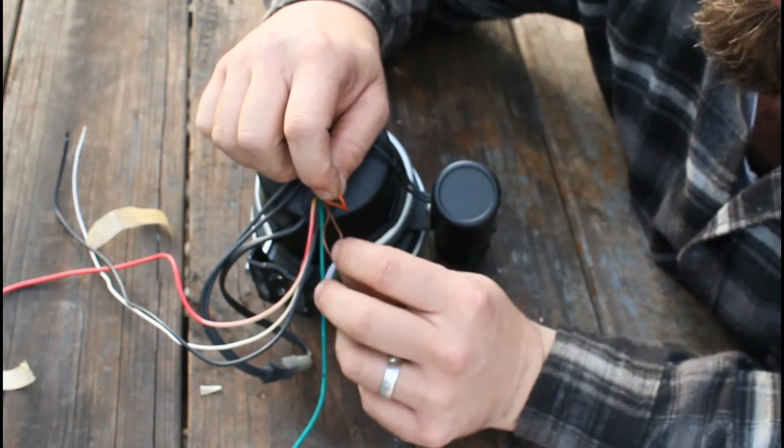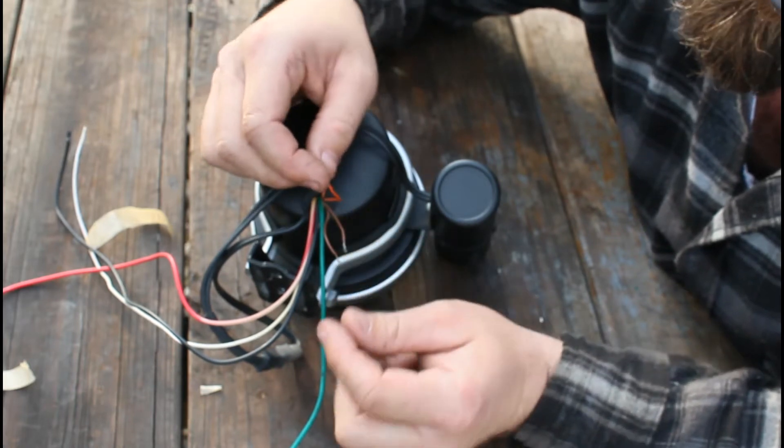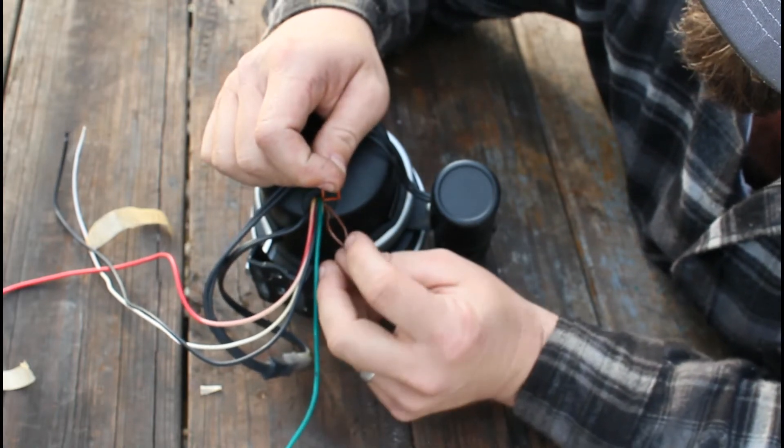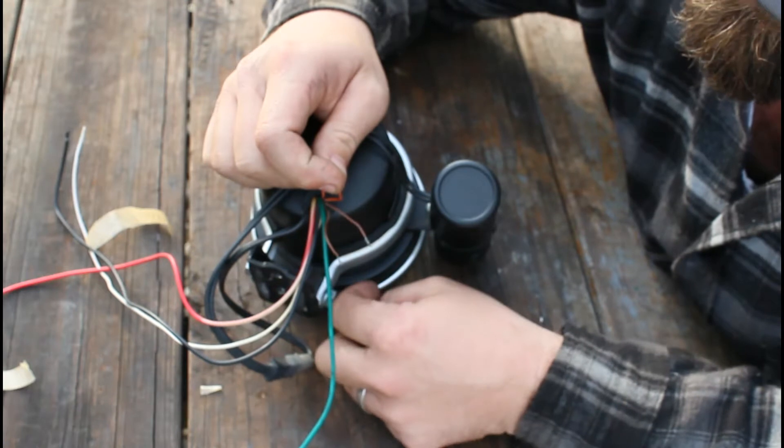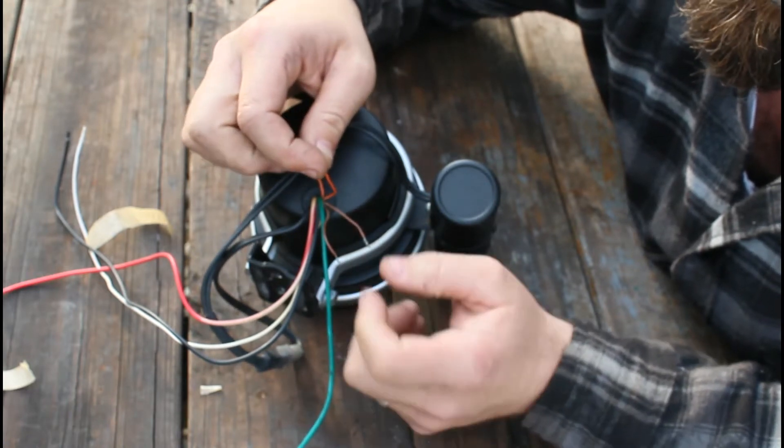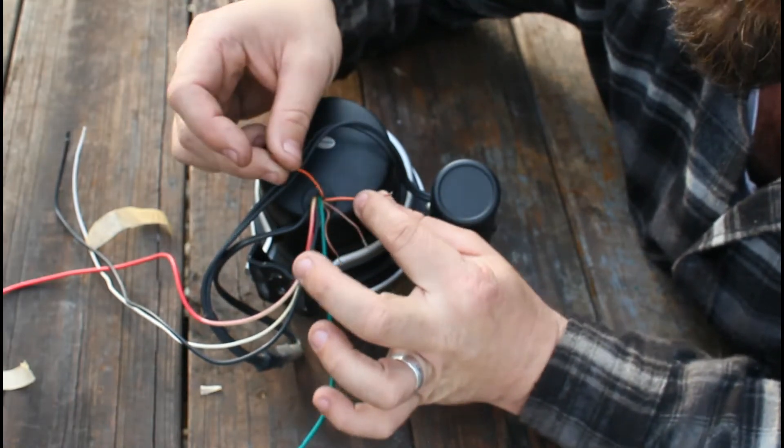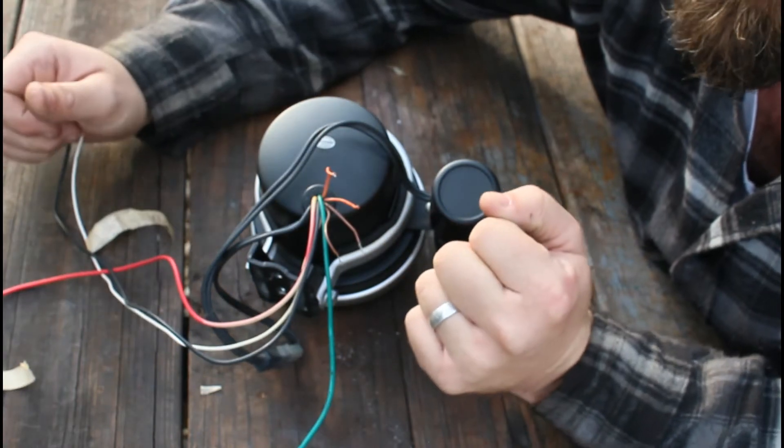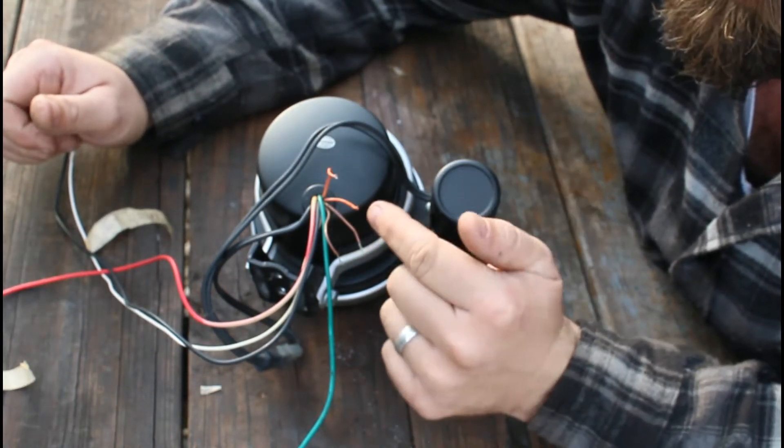On the instructions for Auto Meter it says do not push these into the case. I imagine that's so you can adjust it. If you leave the orange ones connected and the brown ones cut, that's going to be for a six-cylinder. If you cut both sets of wires, that will be for a four-cylinder. As you can see, both of these are cut.